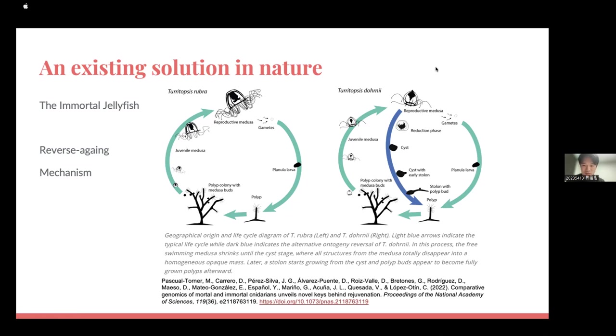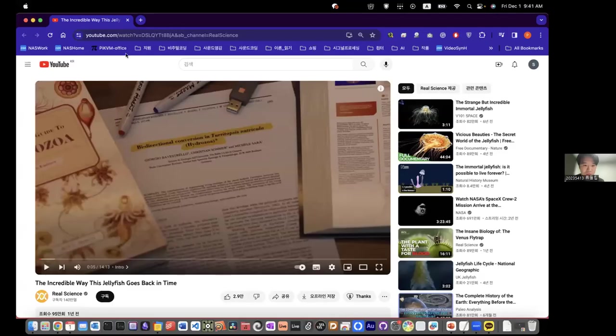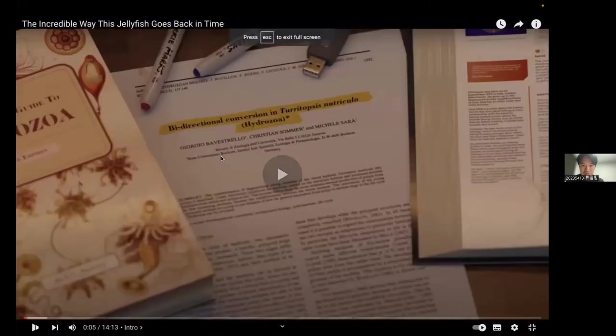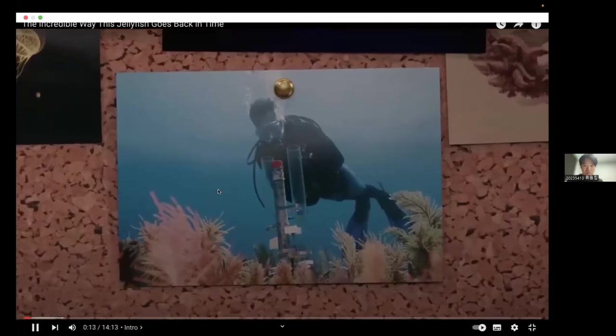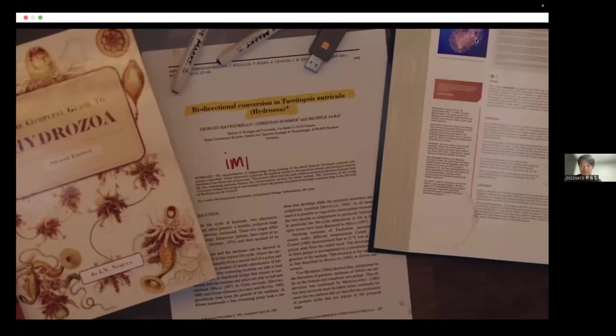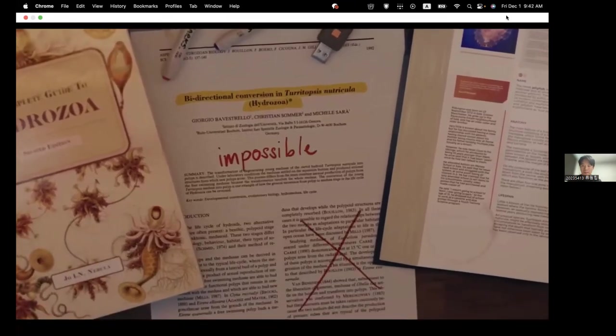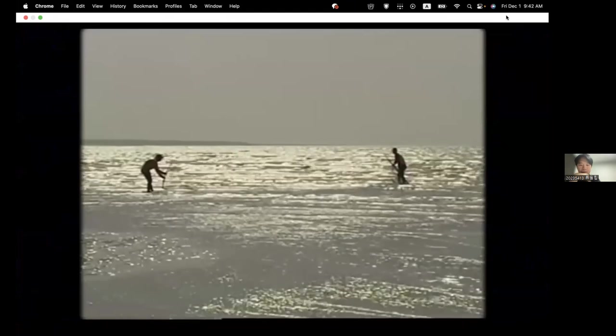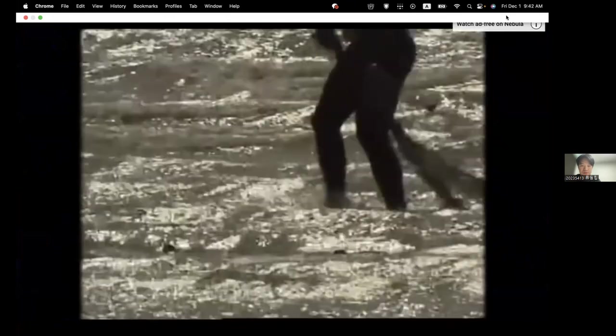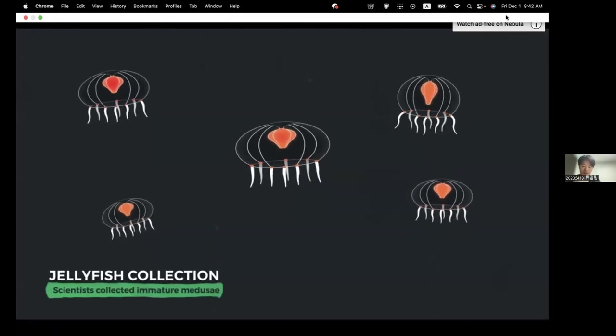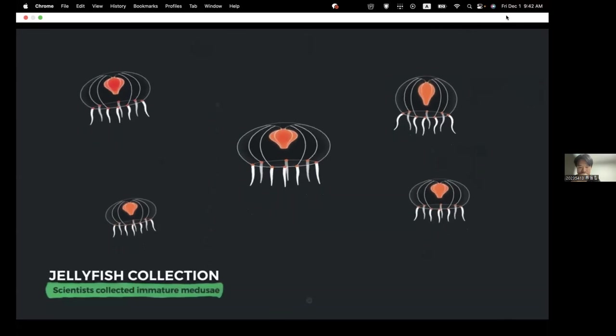There's an actually existing solution in nature already: the immortal jellyfish. The jellyfish called Turritopsis dohrnii, known as the immortal jellyfish, has a reverse aging mechanism. The left shows a normal jellyfish life cycle. It grows from very small, becomes bigger, then dies, but descendants are reproduced again and cycle.